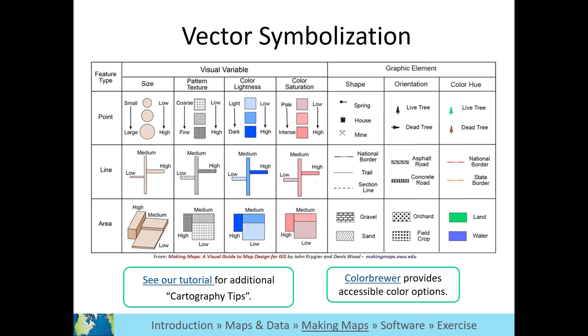The Color Brewer website allows you to filter colors based on those that can be viewed by people with colorblindness. ArcGIS Pro also has this option in its symbology menu.